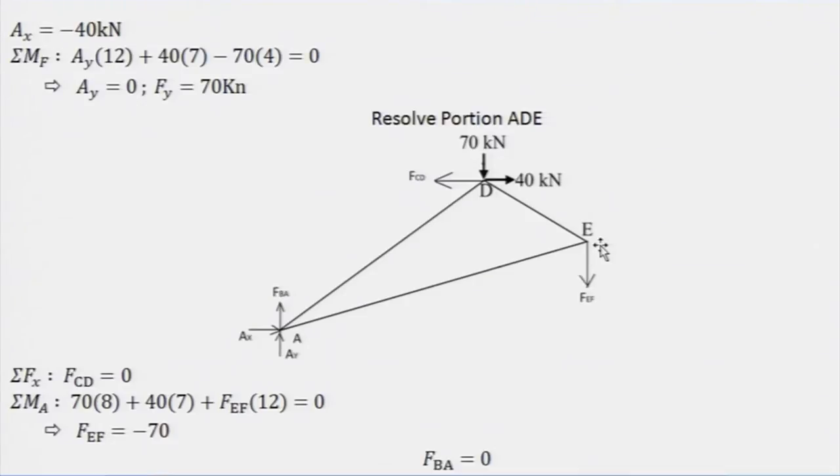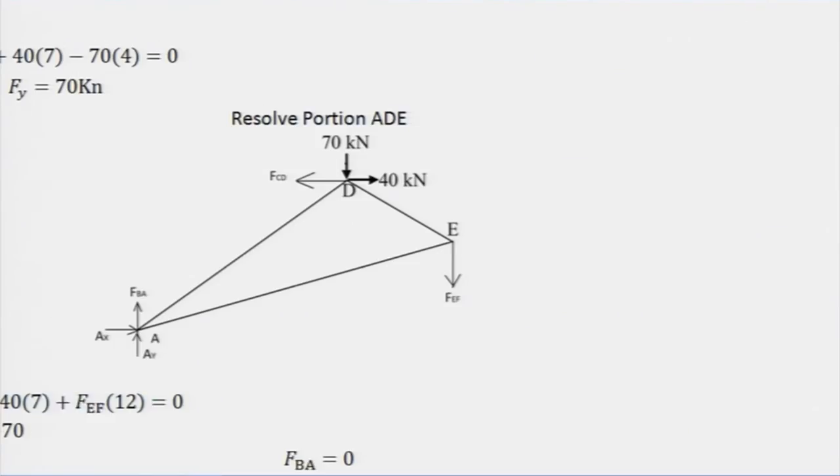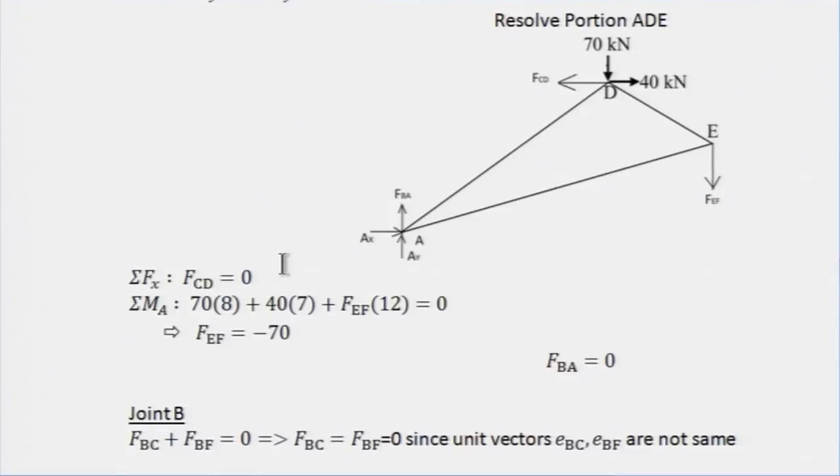Once you get the reactions from the first part, just analyze this one. We should be able to get FAB very quickly. FCD, just take the sum of force along X equals 0. That is the basic thing that we have discussed, how to solve the compound truss. Now you can look at the solution afterwards, but ultimately the idea was: can we solve a compound truss problem? That is done.